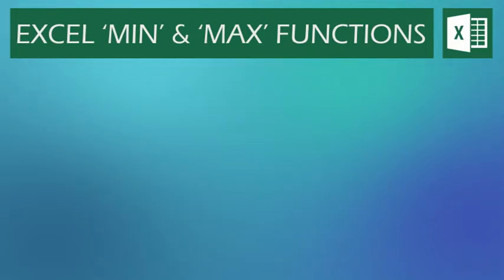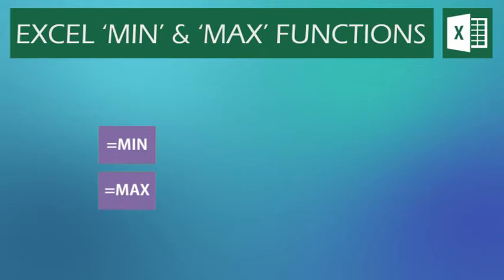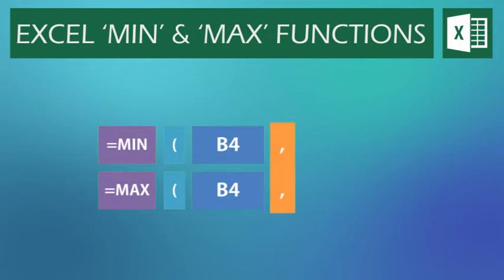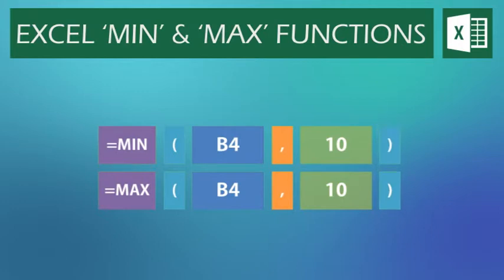The values used in MIN and MAX can be a range of cells or numbers. For example, you could type equals MIN or MAX, open brackets, then have a cell such as B4, comma, and then a value such as 10, then close the brackets. For the MIN function, this would look at the number 10 and the value within cell B4 and return the lowest. With the MAX, it would look at the value 10 and the value within cell B4 and return the highest.